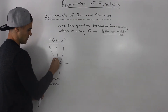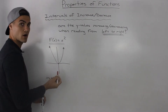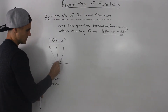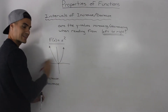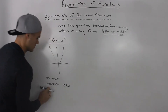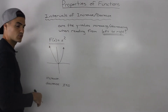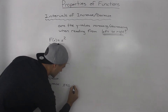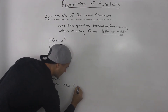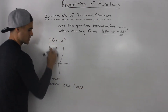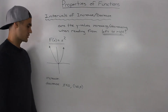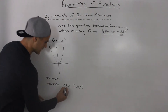Moving from the outermost left to right, you can tell that the y values are decreasing up until an x value of zero. So there's an interval of decrease when the x values are less than zero. We can put: when x is less than zero, the function is decreasing. You can also show this in interval notation: from negative infinity to zero, the function is decreasing.